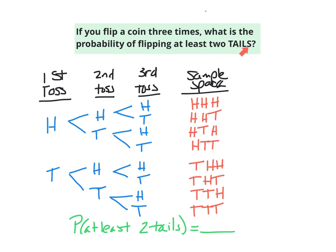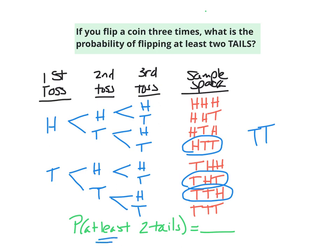So I'm looking for an outcome that has a tail and a tail, and the order doesn't matter. Looking at this list of outcomes, I'm going to circle the ones that have two tails. This is the first outcome with two tails, here's another, and here's a third. It says at least two tails, so the last one with three tails counts as well.